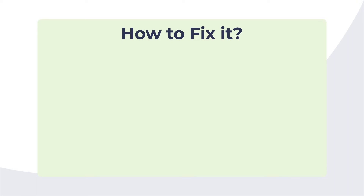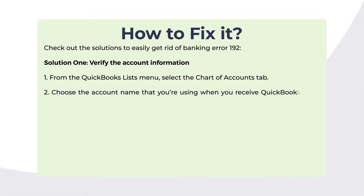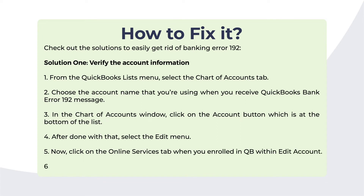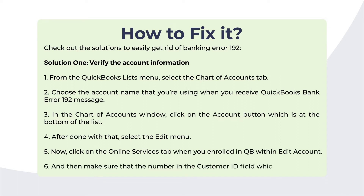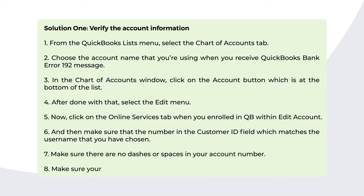How to fix it — Solution 1: Verify the account information. From the QuickBooks Lists menu, select the Chart of Accounts tab. Choose the account name you're using when you receive error 192. In the Chart of Accounts window, click the Account button at the bottom of the list, then select Edit. Click the Online Services tab. Make sure the number in the Customer ID field matches your username, with no dashes or spaces in the account number, and verify your routing number is correct. If this doesn't work, try a manual restore advanced solution.